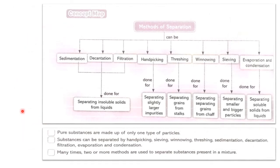Now let's look at the table of methods of separation. The methods we have discussed are: sedimentation, decantation, and filtration — which are used to separate insoluble solids from liquids. Hand picking is done for separating slightly larger impurities.